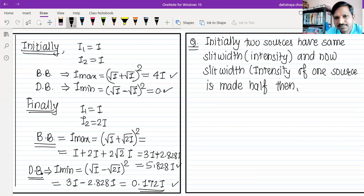Intensity of BB increases, DB decreases. Intensity of BB decreases, DB increases. And intensity of both BB and DB decreases. Okay, this option is correct.